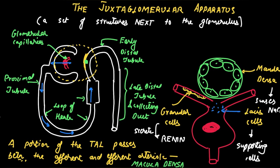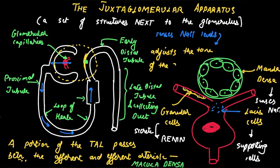The macula densa senses NaCl in the tubular fluid and adjusts the tone of the afferent arteriole: when NaCl delivery increases, it constricts the afferent arteriole; when NaCl delivery decreases, it dilates it. So the juxtaglomerular apparatus is made of three structures: the macula densa, which senses NaCl; the granular cells, which synthesize renin; and the lacis cells, which are the supporting cells.